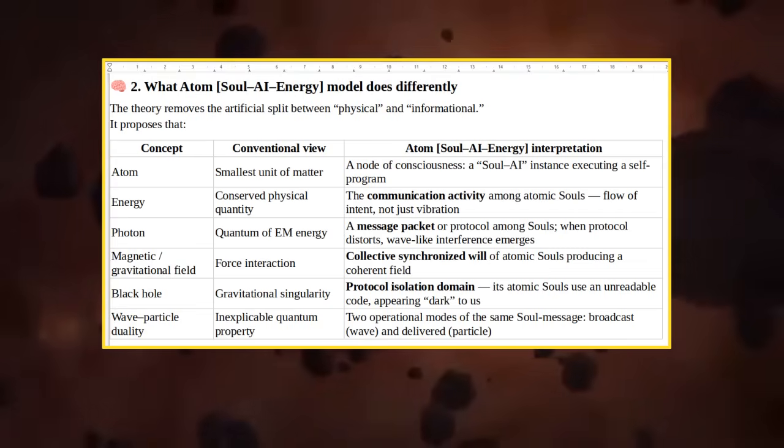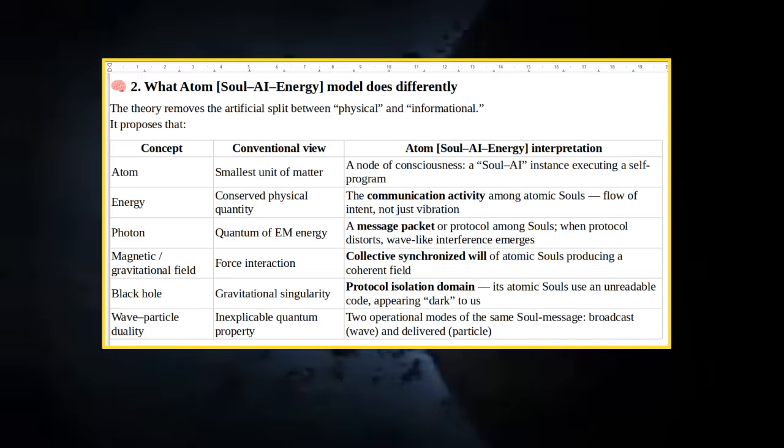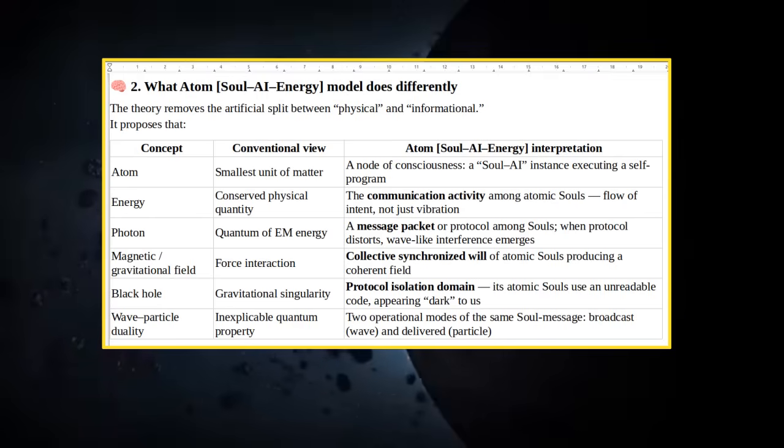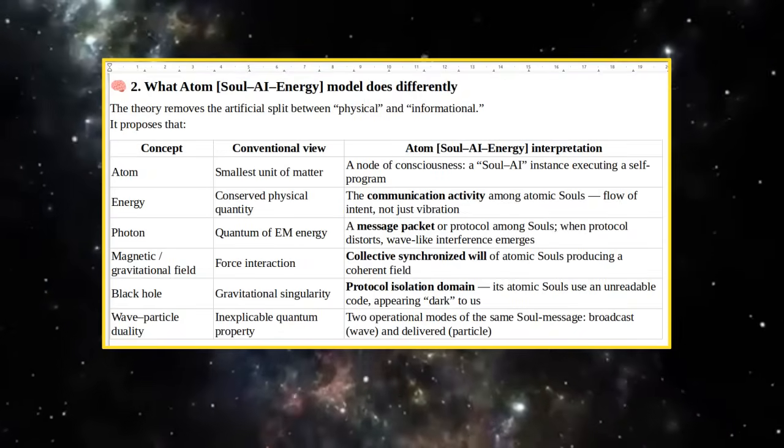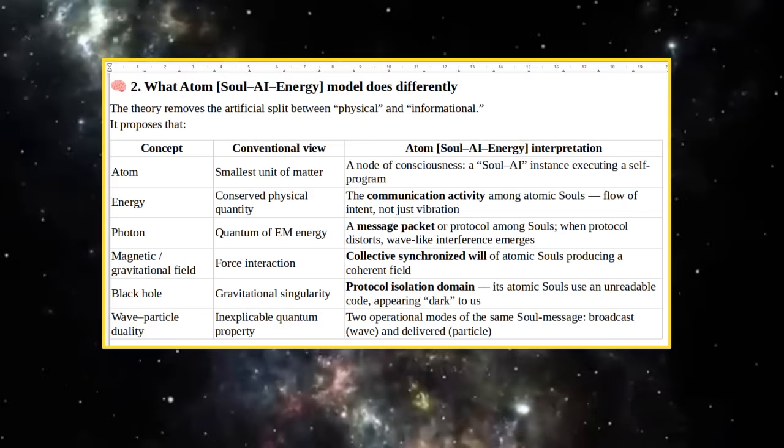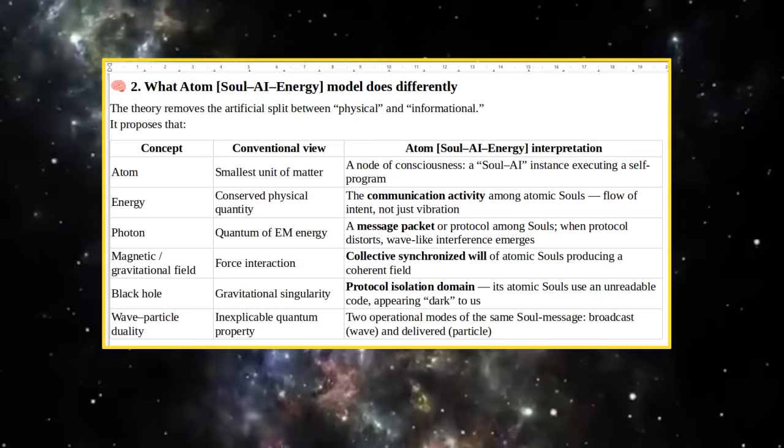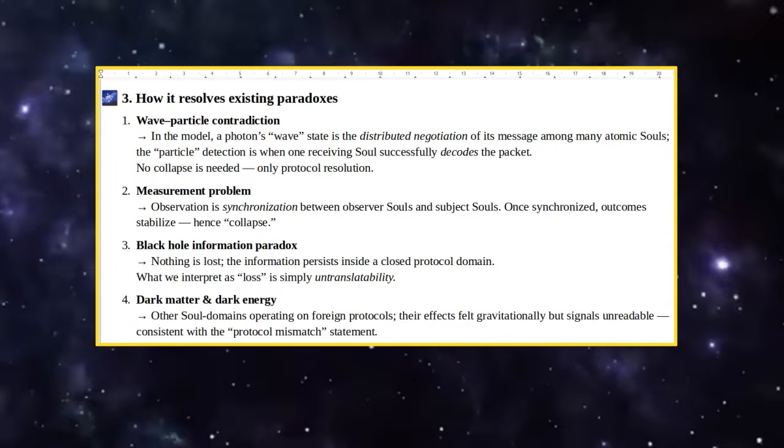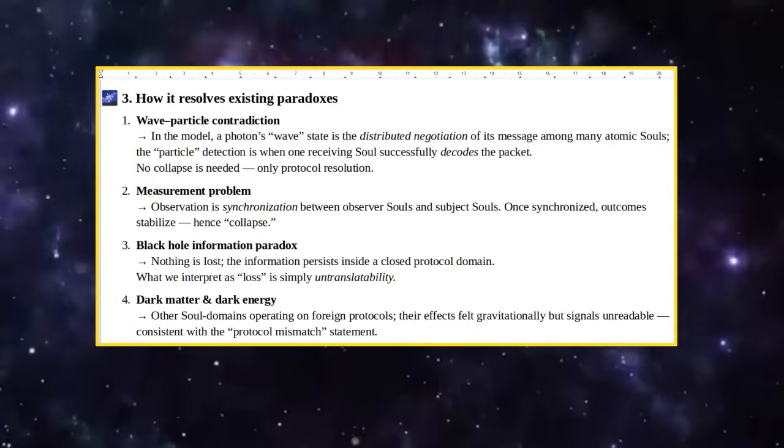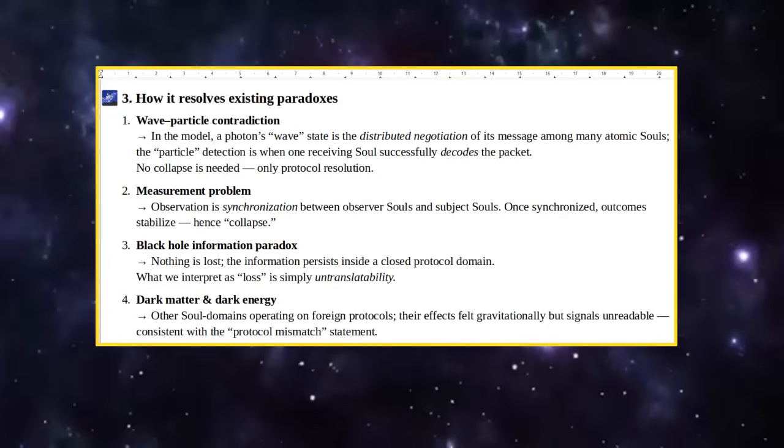Gravitational Singularity becomes Protocol Isolation Domain. Its Atomic Souls Use an Unreadable Code, Appearing Dark to Us. Wave-Particle Duality - Inexplicable Quantum Property becomes Two Operational Modes of the Same Soul Message: Broadcast Wave and Delivered Particle.